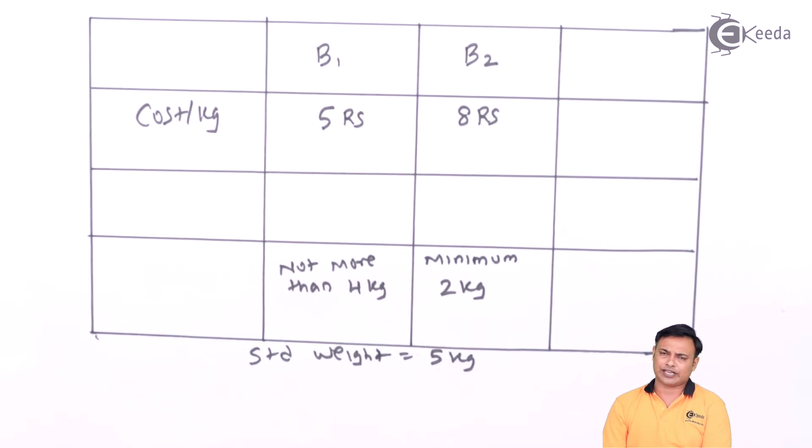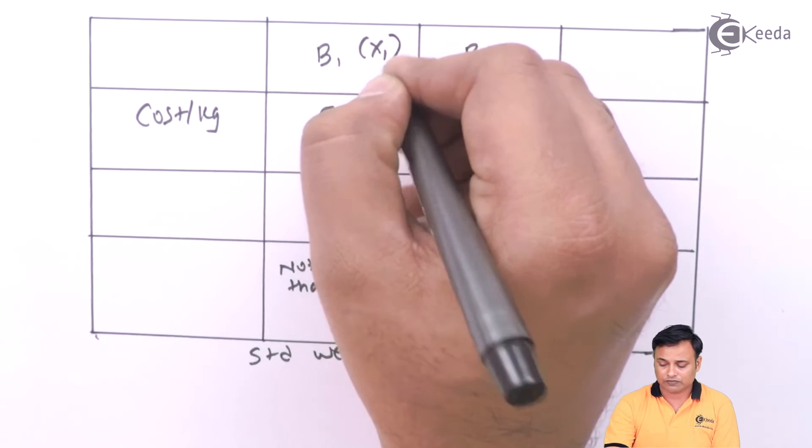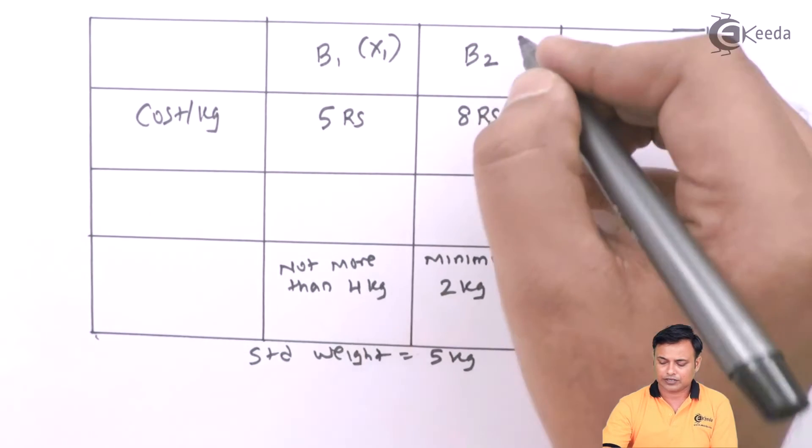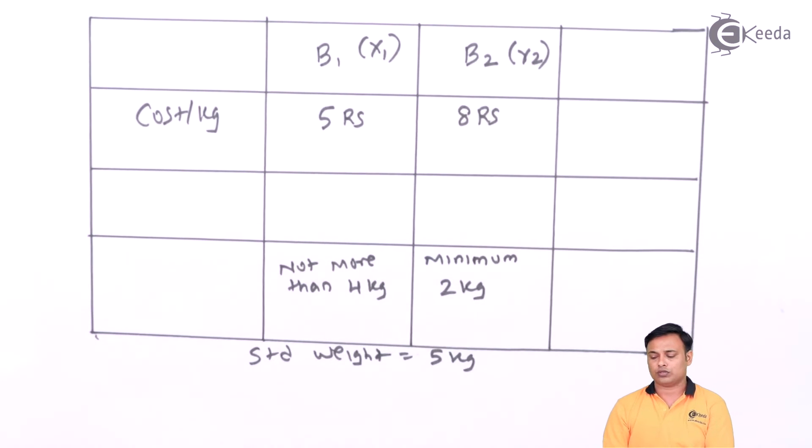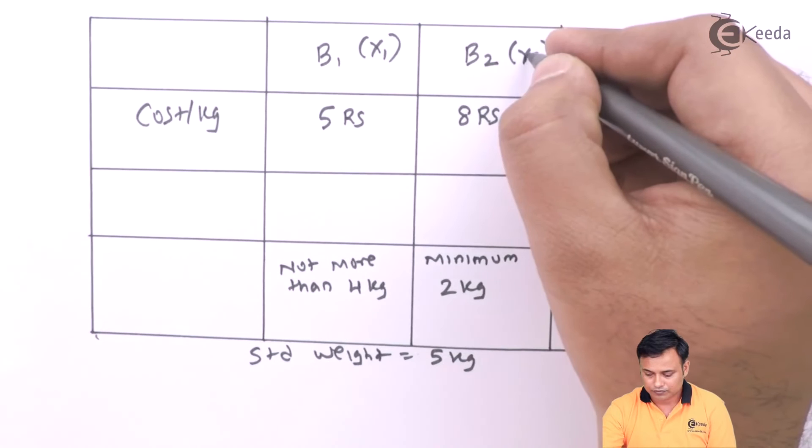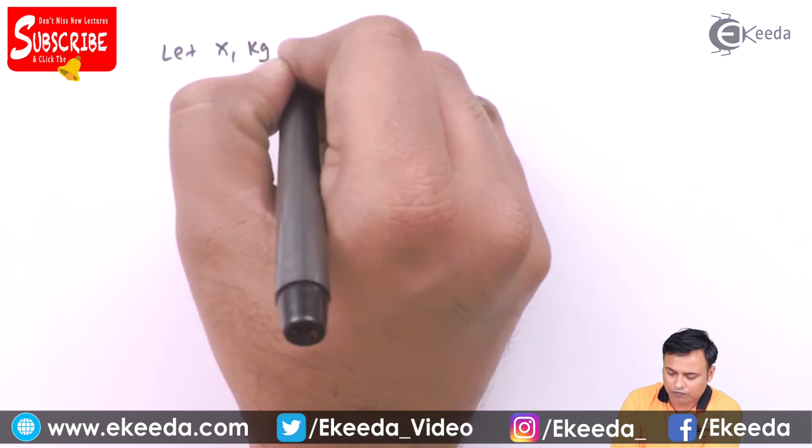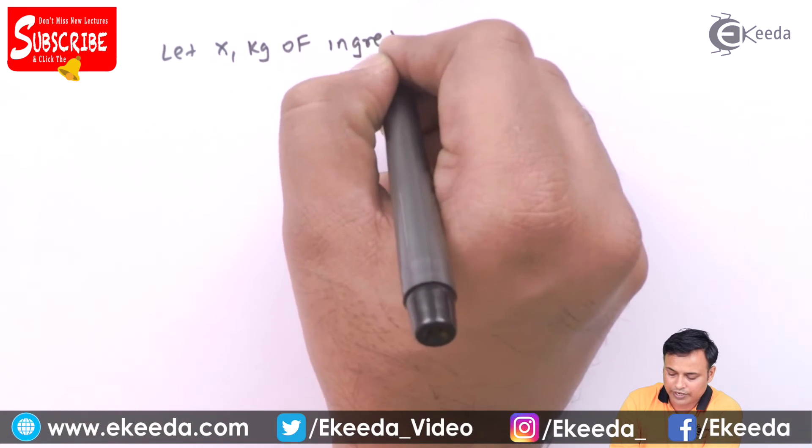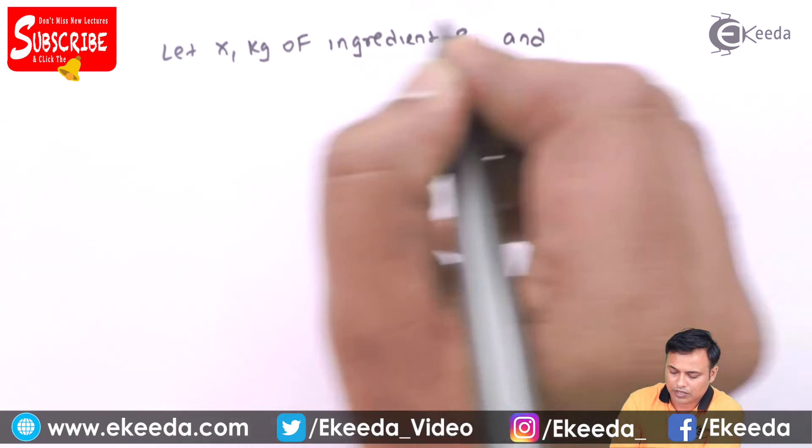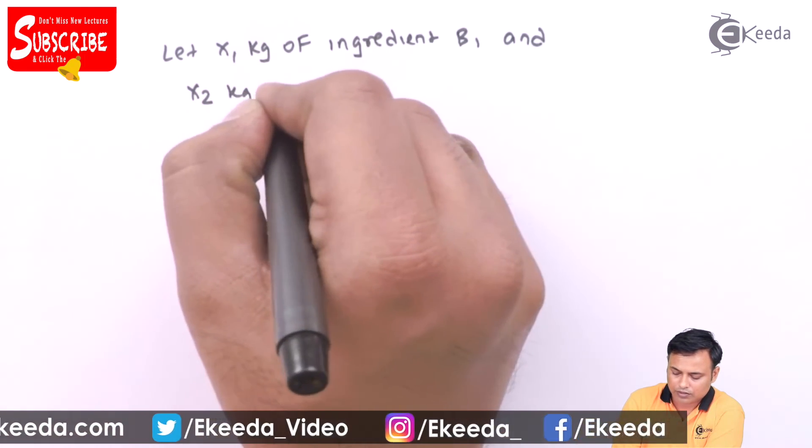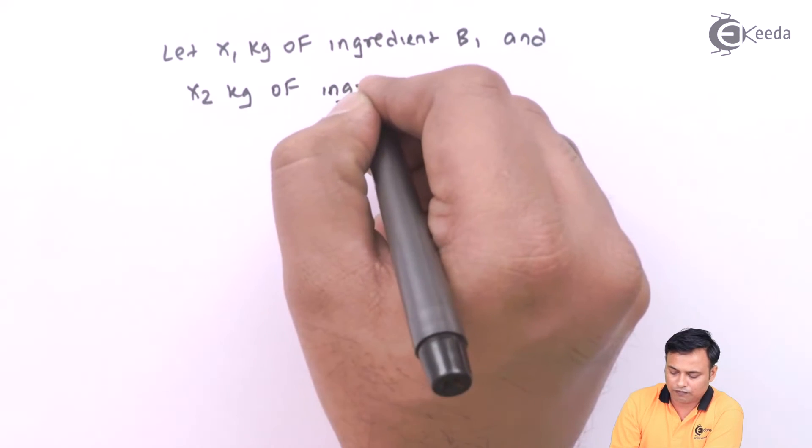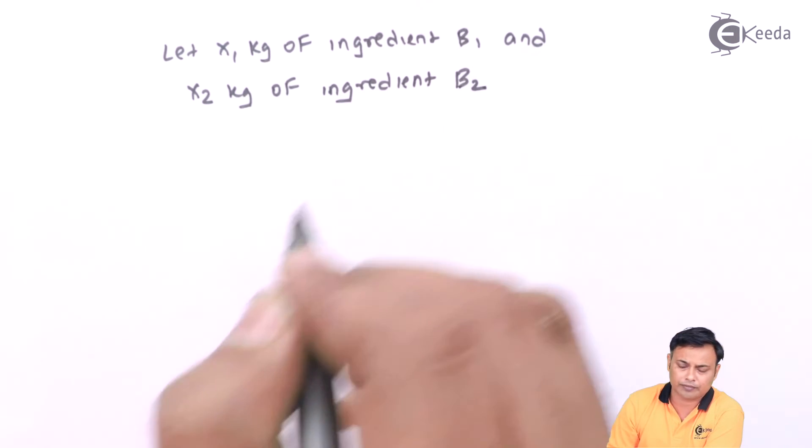That is the standard that has been set by this particular manufacturing unit. Now we need to make the assumption that we are putting x1 kg of ingredient B1 and x2 kg of ingredient B2 in my brick. Let x1 kg of ingredient B1 and x2 kg of ingredient B2.